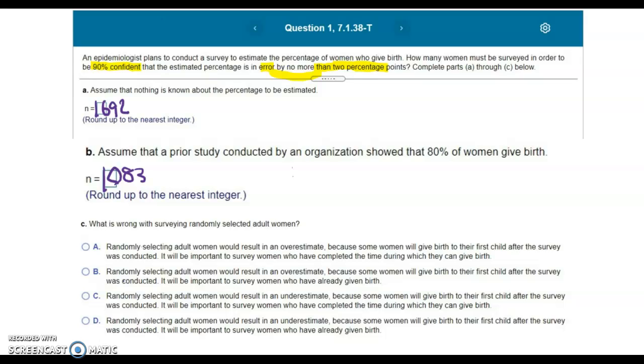So it's important in this case to survey women who've completed the time during which they can give birth. That way your results are more accurate. So that would give us an answer C for this problem.